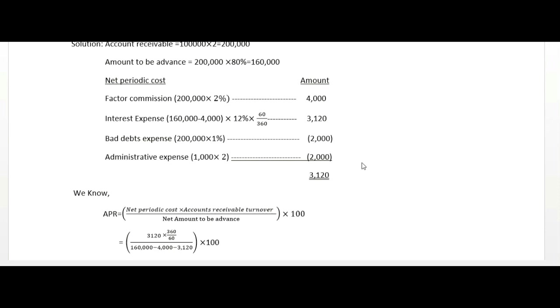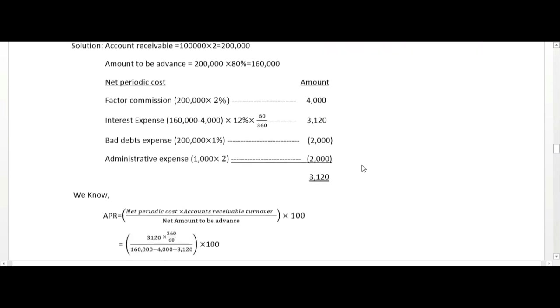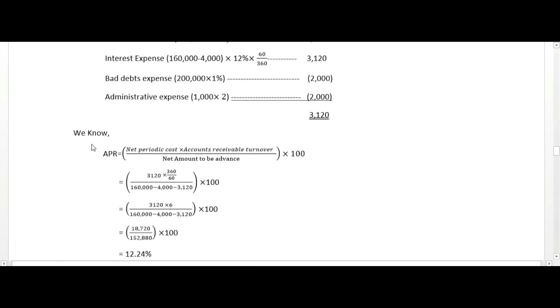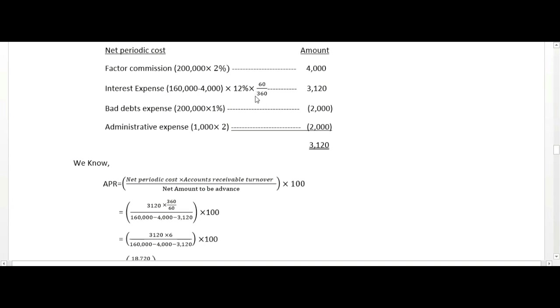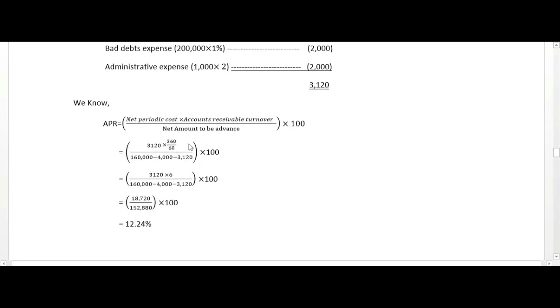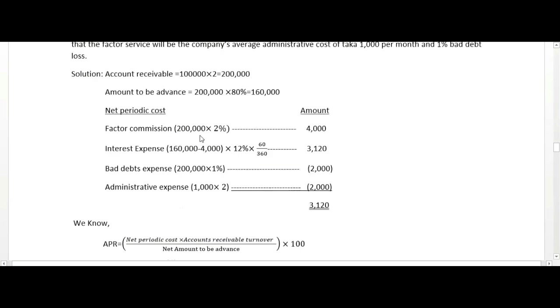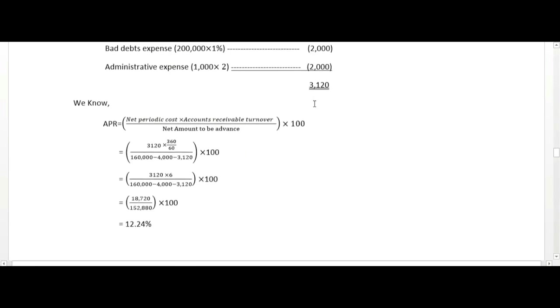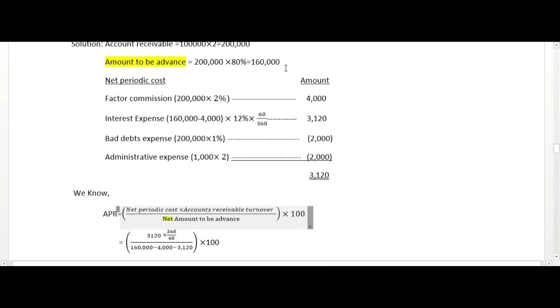The APR formula is: net periodic cost times account receivable turnover divided by net amount to be advanced. Account receivable turnover is calculated as 365 days divided by collection period. Need amount to be advanced is 160,000.